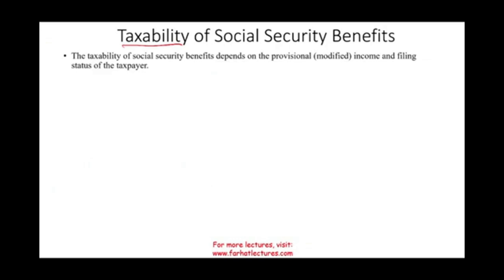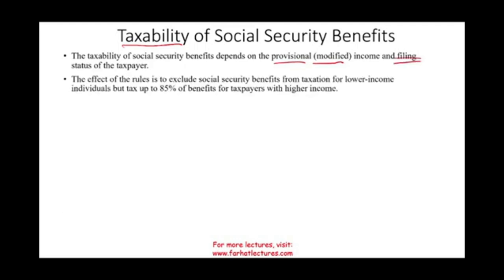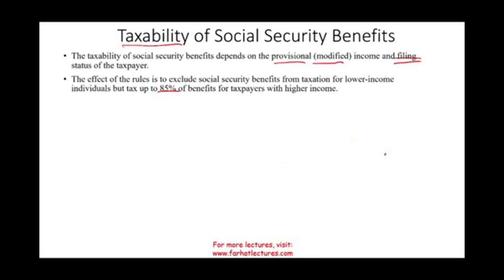The taxability of social security benefit depends on something we call the modified or provisional income, and it depends on your filing status. The effect of the rules is to exclude social security benefit for people who are in the lower individual tax bracket. If you don't make a lot of money, if you're in a low tax bracket, none of your social security benefit is taxable. If you are in a slightly higher tax bracket, up to 85% could be taxable. So it could be zero to 85%.